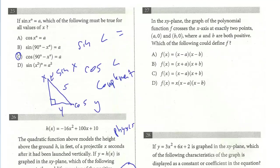Let's take a look at 27. In the xy-plane, the graph of the polynomial function f crosses the x-axis at exactly two points, a0 and b0, where a and b are both positive. Which of the line could define f? This is a pretty straightforward question. We have these functions in intercept form. And they're just saying, what would the two solutions be? For a and b for the x, and they're both positive.